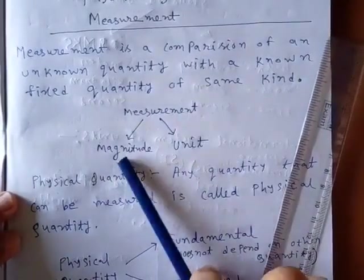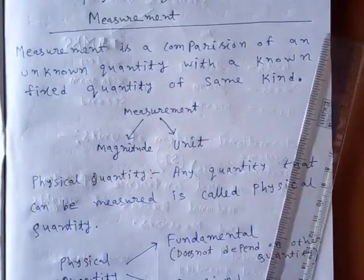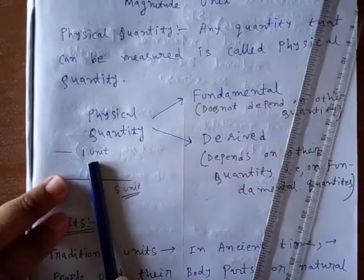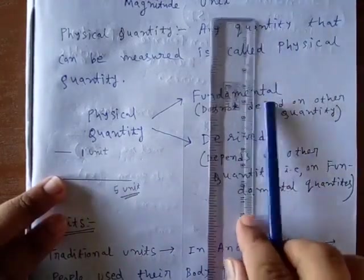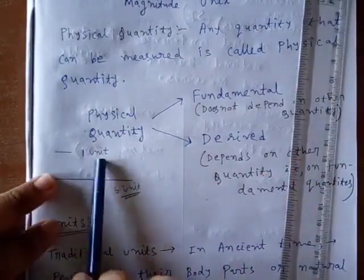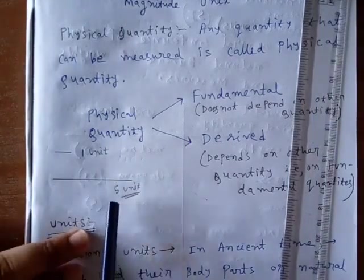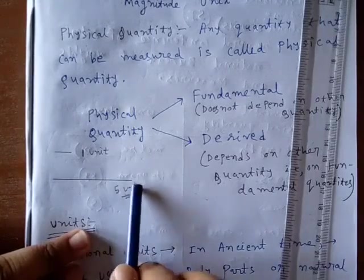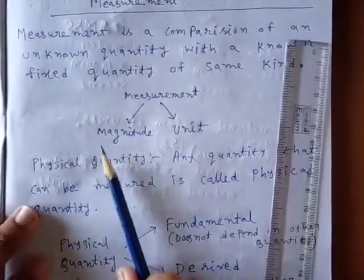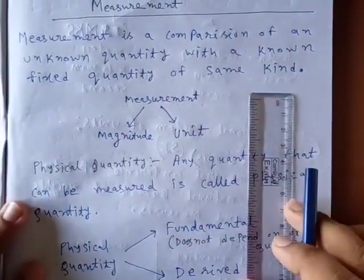Now, measurement requires basically two things. One is magnitude, one is unit. In this case, this is unit. I am writing here unit. Basically this unit is centimeter. I draw this line with the help of this scale. So this is the magnitude, one and five. And here after the magnitude we place the unit. A measurement requires two things: magnitude and unit. Let us see the complete definition of measurement.